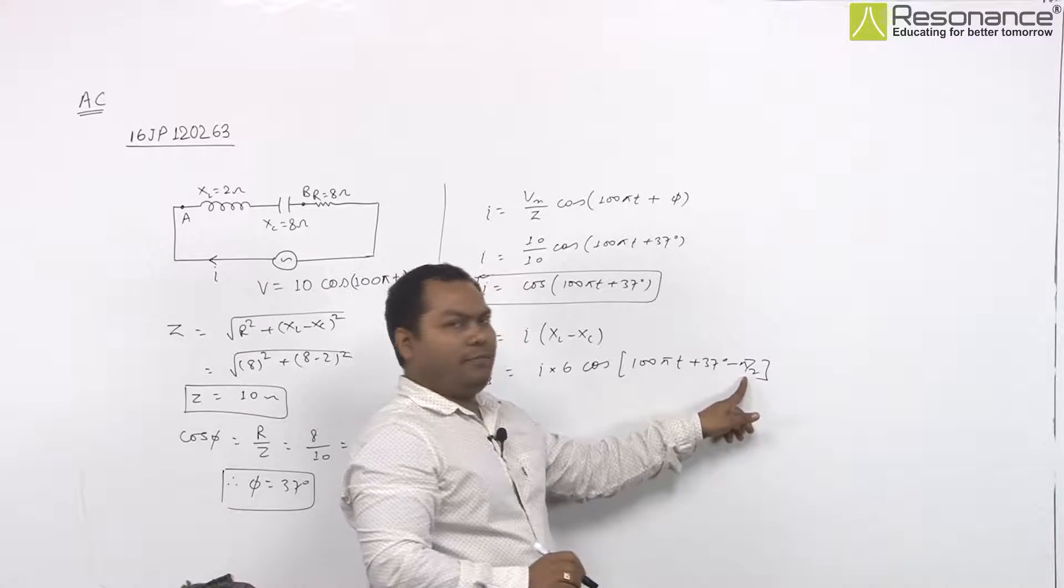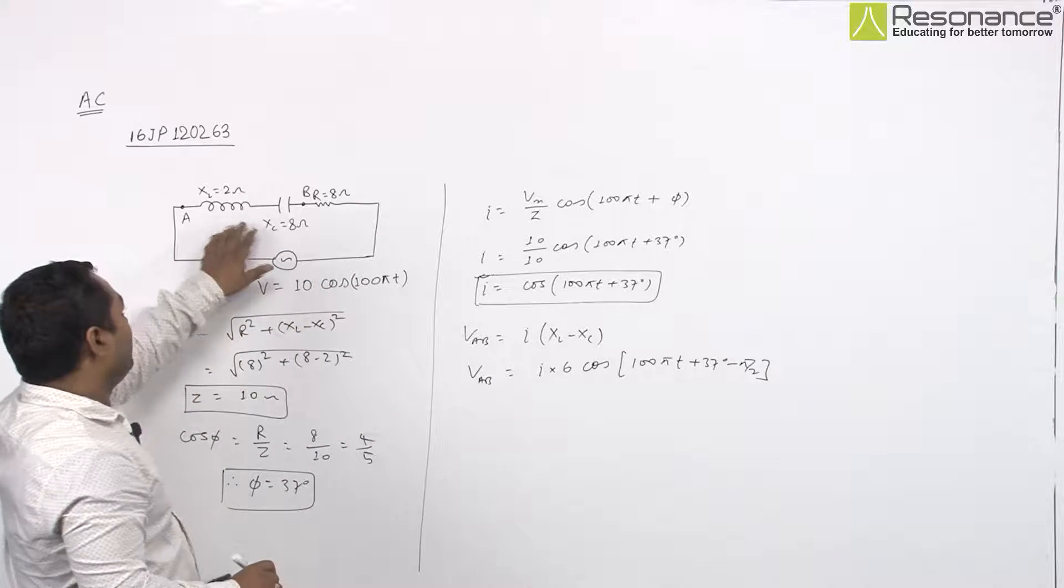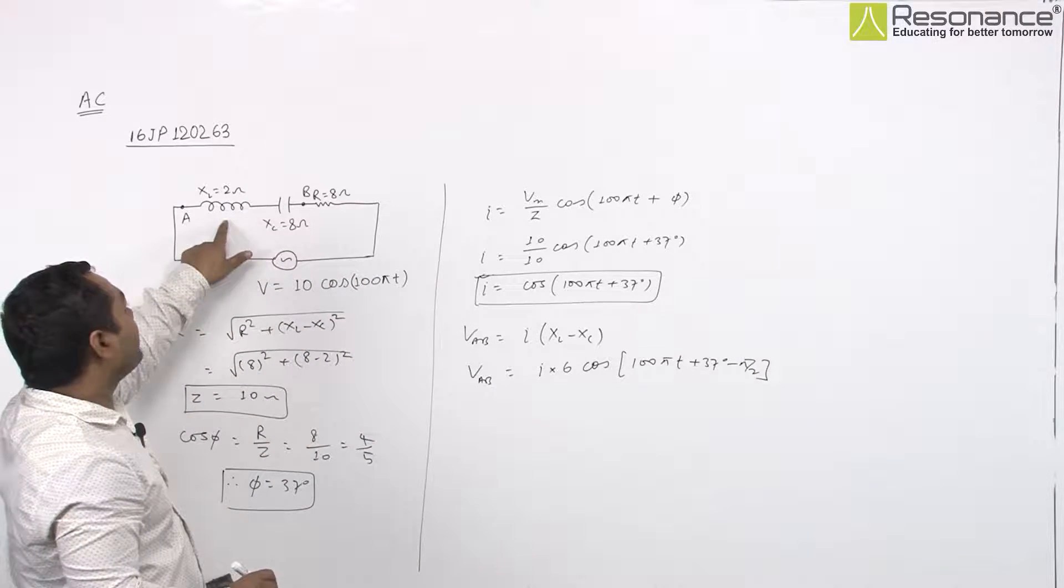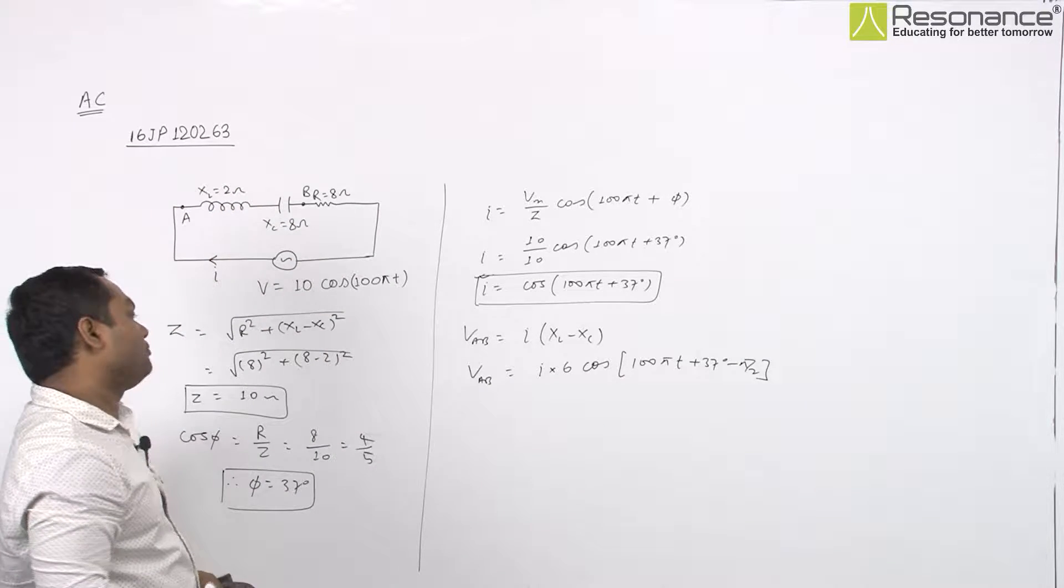You see, here I have taken minus pi by 2. Why? Because XE value is greater than XL value, so overall circuit will be of capacitive nature.